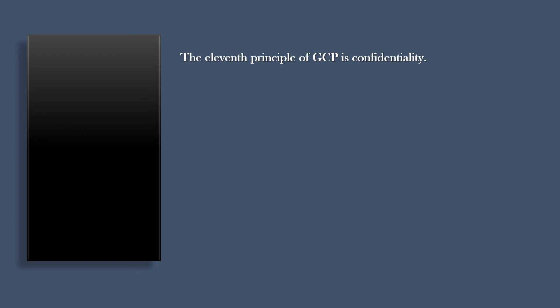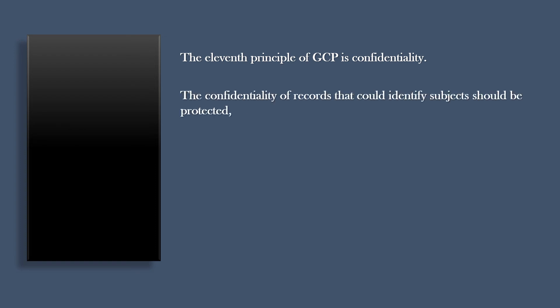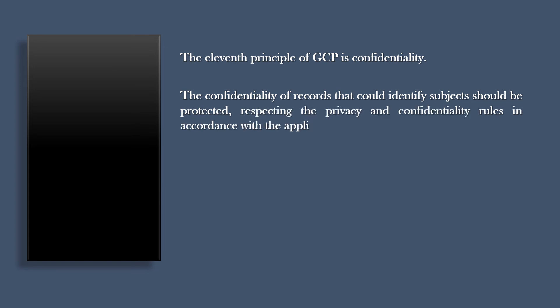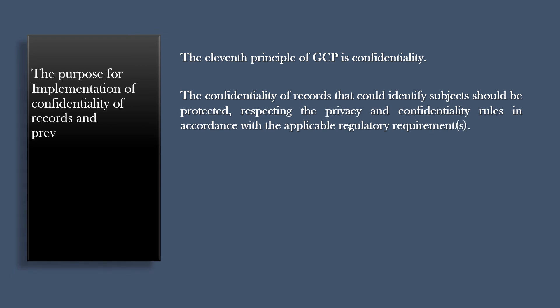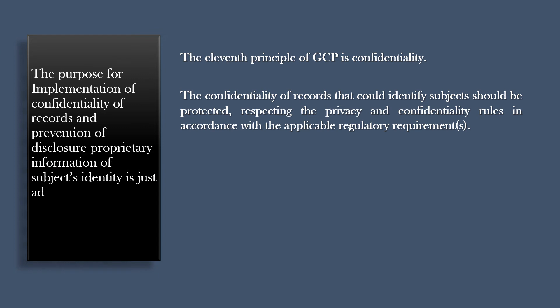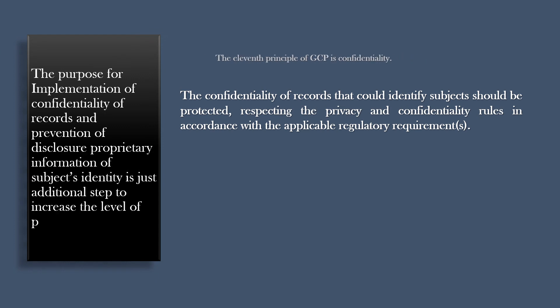The eleventh principle of GCP is confidentiality. The confidentiality of records that could identify subjects should be protected, respecting the privacy and confidentiality rules in accordance with the applicable regulatory requirements. The purpose of implementing confidentiality and prevention of disclosure of subjects' identity is an additional step to increase the level of protection of the rights, safety, and well-being of trial subjects.